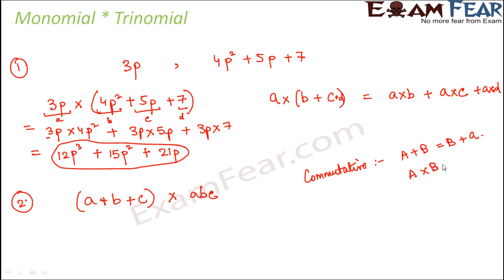So we have learned all of these, right? So using this we can say that (a + b + c), if we consider this entire thing as a and this entire thing as b, then we can say that a into b is equal to b into a.